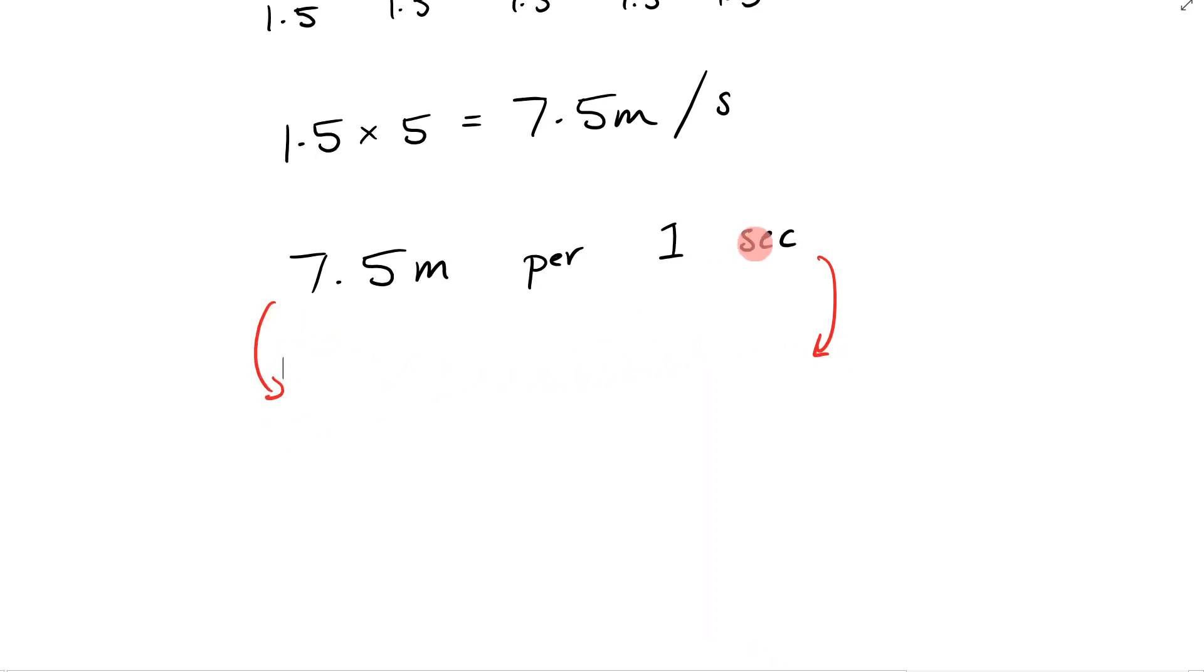Okay, so first things first. Let me change this one second into one minute. To do that, you have to ask yourself: how many seconds are in a minute? Well, there are 60 seconds in a minute, so I would times both sides by 60. So 7.5 times 60—use your calculator—is 450.